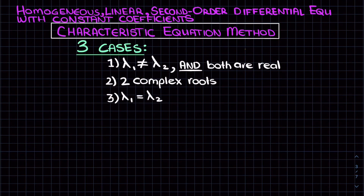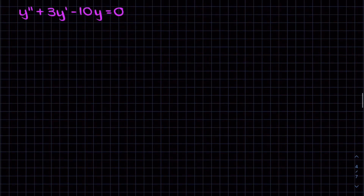In this video we're going to be working through three examples of solving linear homogeneous second order ODEs with constant coefficients. As you can see on the screen, there are three possible cases that can occur with this type of problem, and what case we get will determine which process we need to take to solve it. Let's do an example.